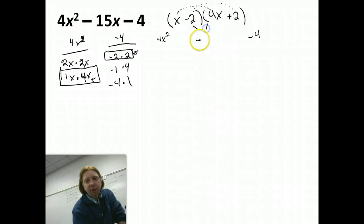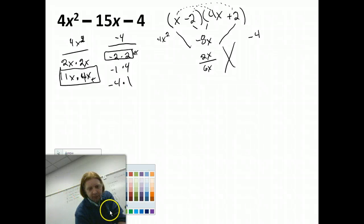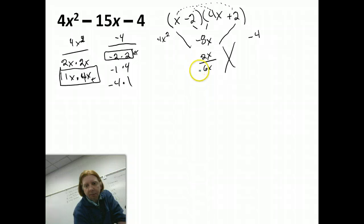No, it doesn't work. If I do the inners, I get negative 8x. The outers gives me 2x. They combine to negative 6x. That didn't work. So let's try, remember, because I added them together. Let's try another combination of numbers.